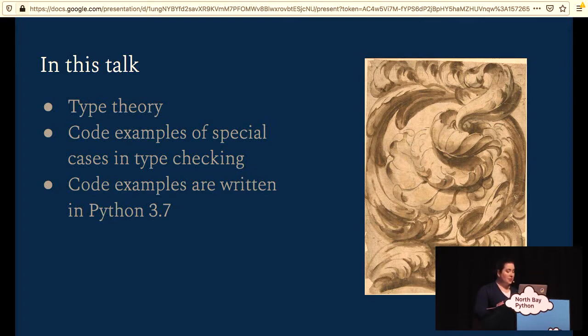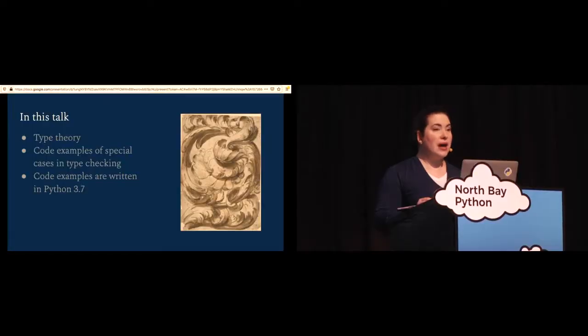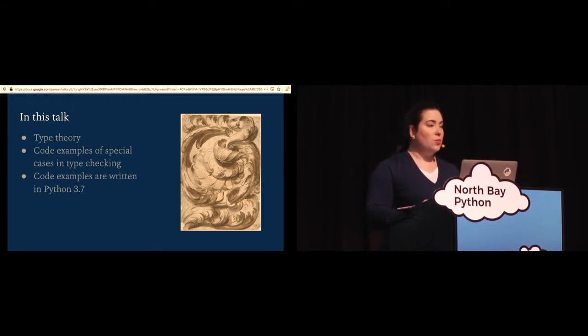All of the code examples in this talk are written in Python 3.7 and MyPy 0.730. So if you want to try them out, that's what you can use. And also as a warning, I have included some illustrations of snakes. So if you are not a fan of snakes, please be warned.